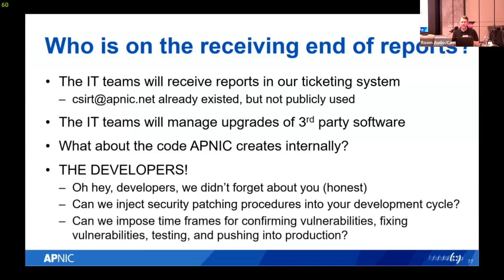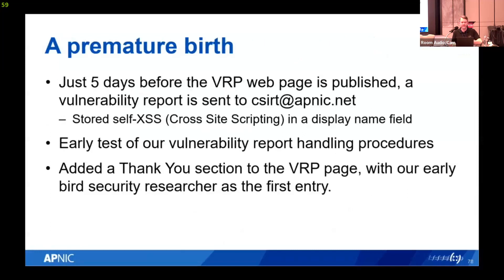We also needed to put in time frames for how quickly developers would confirm a vulnerability, fix it, test it, and push it into production. Just five days before we were going to publish the vulnerability program on the website, we actually got a report to the email address. It might have been public somewhere without us talking about it — we hadn't launched the program properly yet, but it existed, and someone reported a legitimate vulnerability: a cross-site scripting vulnerability, which was a great early test of our procedures.